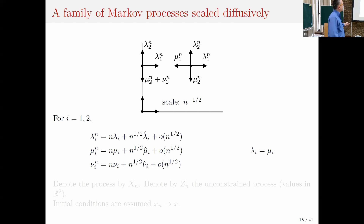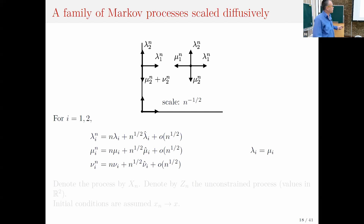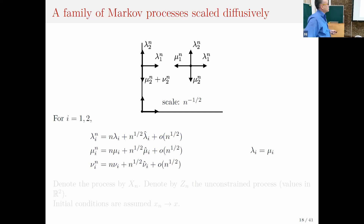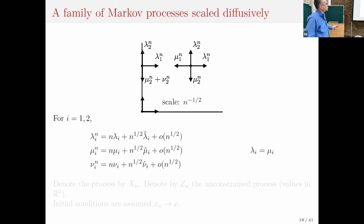The scale here is 1 over square root n, meaning jump sizes are of size 1 over square root n, but the rates are of order n — for example, lambda_{1,n} is linear in n with a correction term of order square root n. Also notice that lambda_i and mu_i are equal to first order, which ensures convergence to a diffusion.